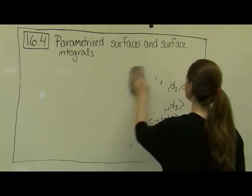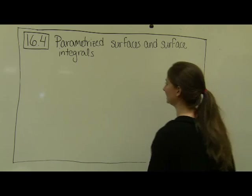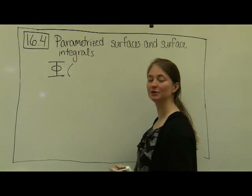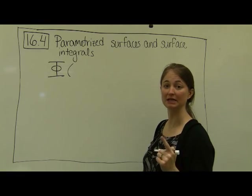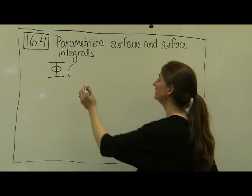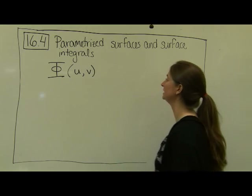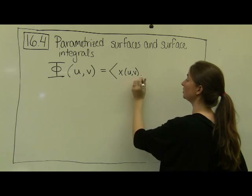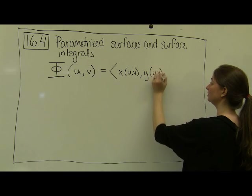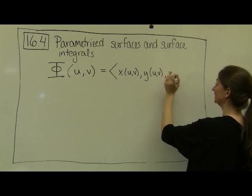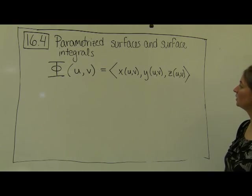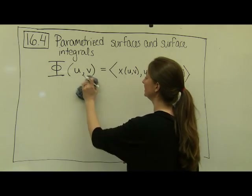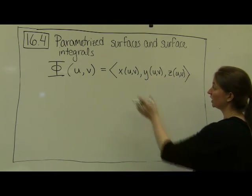By definition, a parametrized surface is typically represented with a capital Phi. Whereas a line is parametrized by just one parameter t and gives us a one-dimensional object, now we consider parametrizations with two input variables u and v. The output is a vector in R3, with three component functions — one depending on u and v for x, one for y, and one for z. We can think of the inputs as points in R2, and the outputs as vectors in R3.